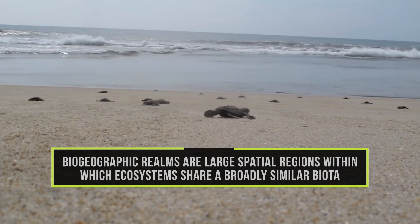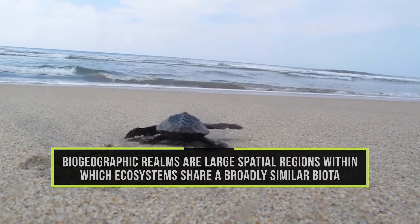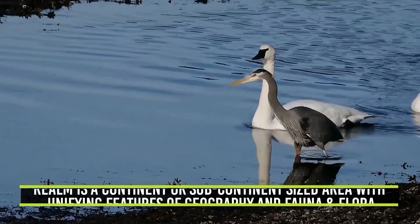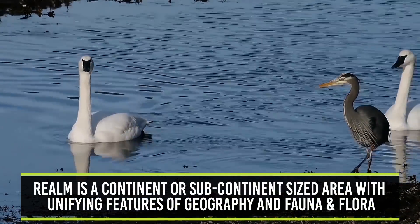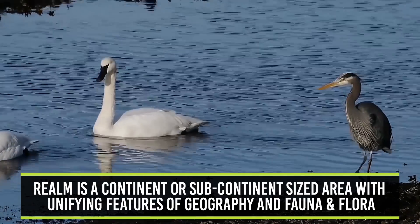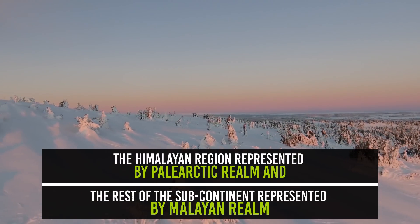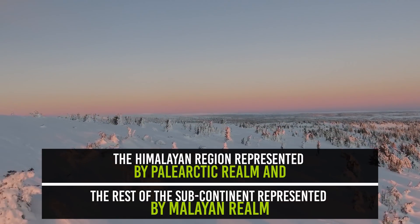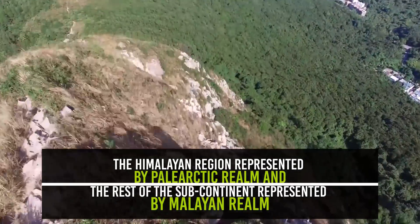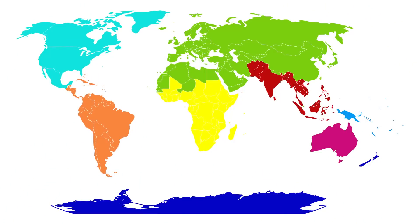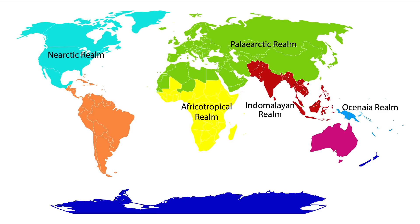Biogeographic realms are large spatial regions within which ecosystems share a broadly similar biota. A realm is a continent or subcontinent-sized area with unifying features of geography and flora and fauna. The Indian region is composed of 2 realms: the Himalayan region represented by the Palearctic realm and the rest of the subcontinent represented by the Indomalayan realm. In the world, 8 terrestrial biogeographic realms are typically recognized: the Nearctic realm, the Palearctic realm, the Afrotropical realm, the Indomalayan realm, the Oceanian realm, the Australasian realm, the Antarctic realm and the Neotropical realm.